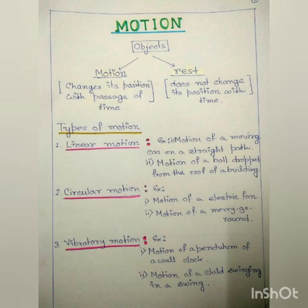What is linear motion? If a body moves along a straight path, then we can consider it is in linear motion. Examples are: the motion of a moving car on a straight road, or the motion of a ball dropped from the roof of a building.